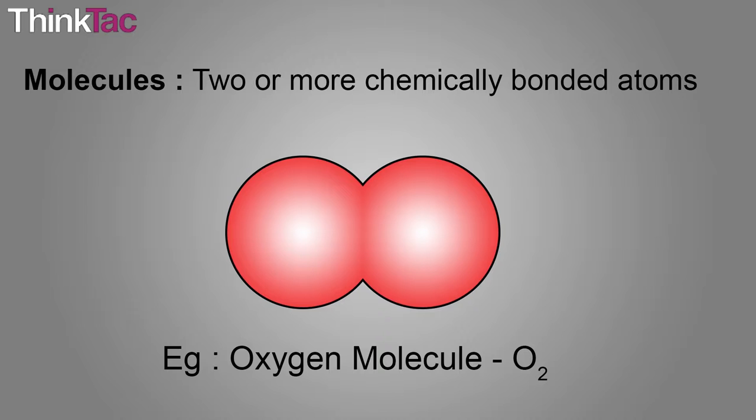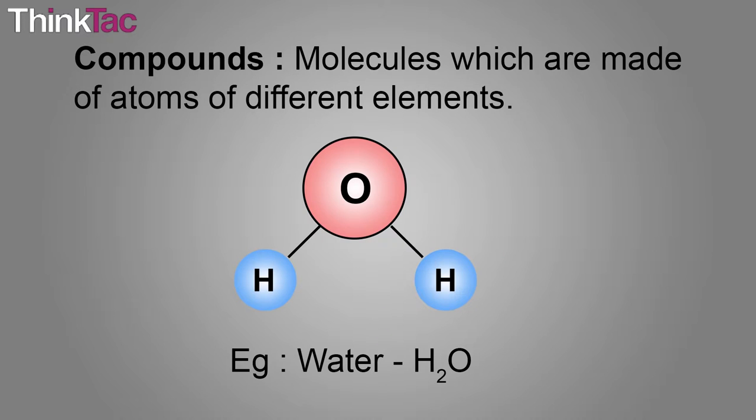Oxygen, for example, is most commonly found in its molecular form O2. Two oxygen atoms bonded together. An example of a commonly occurring compound that is composed of two different types of atoms is pure water, or H2O.